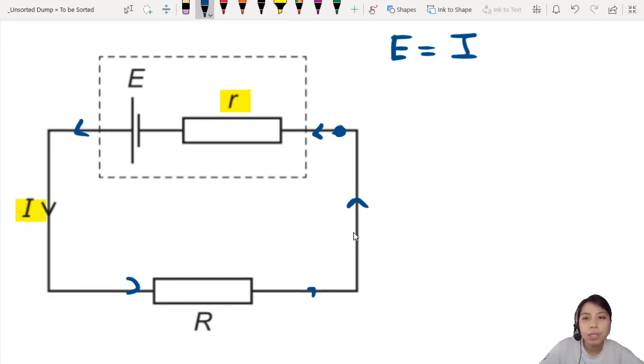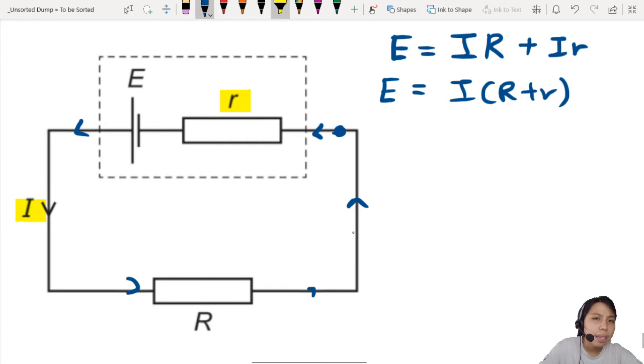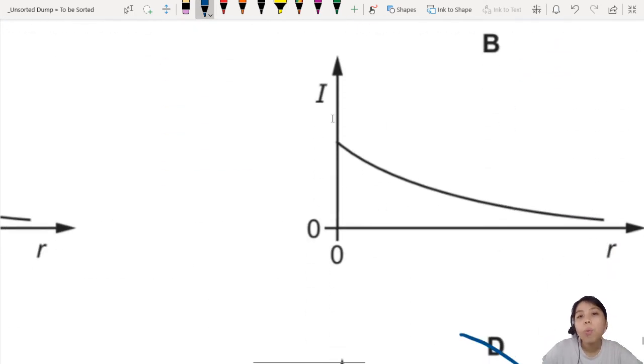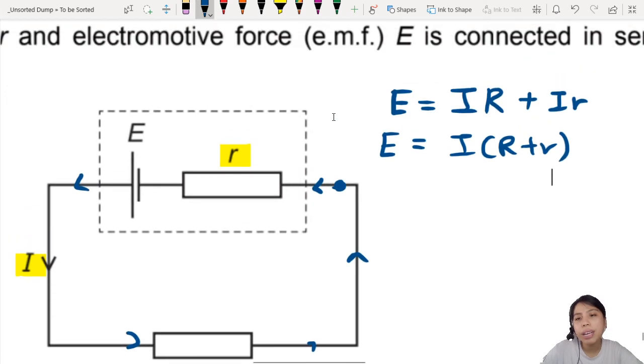So the first potential drop will be IR. You also have another potential drop across the small internal resistor. You can simplify this to E = I(R + r). Now, what are our variables again? We have on our x-axis r, y-axis I. So can I rearrange this into I equals to something something?